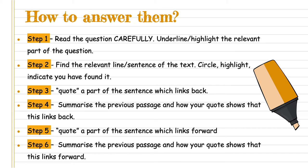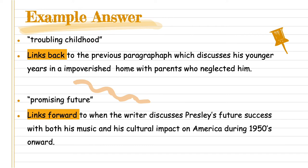We're going to go through what an example answer may look like now. At National Five level, there are four bullet points, equally split into two, giving you two marks. The first two bullet points: 'troubling childhood' is a quote from the linking sentence, and we see how this links back to the previous paragraph discussing his younger years and impoverished home with parents who neglected him. Bullet points three and four: 'promising futures' links forward to when the writer discusses Presley's future success with both the music and his cultural impact on America during the 1950s onwards.